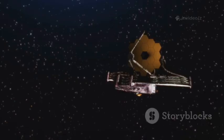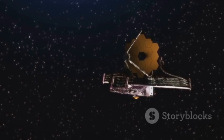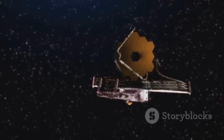Webb's primary mirror, over six meters wide and coated in gold, is engineered to catch ancient stretched infrared light, signals that have traveled billions of years.